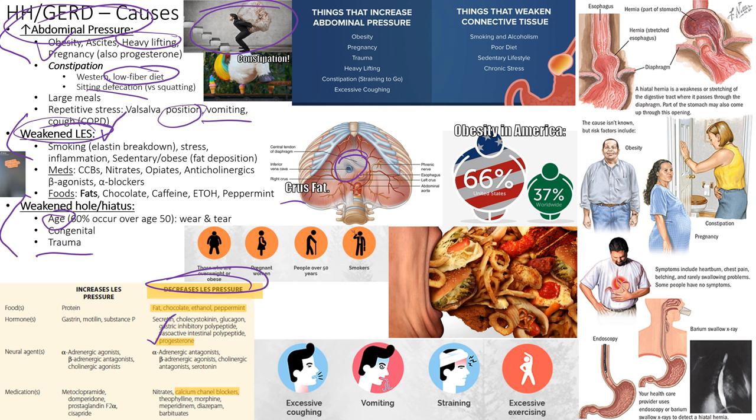Progesterone causes decreased LES pressure. Repetitive coughing — such as in COPD — and vomiting also increase intra-abdominal pressure. Large meals are a risk factor too. Smoking breaks down elastic tissue and weakens the LES. Stress and steroid use break down collagen around the sphincter. Chronic inflammation and sedentary obesity with fat deposition around the crux all contribute to a weakened LES.